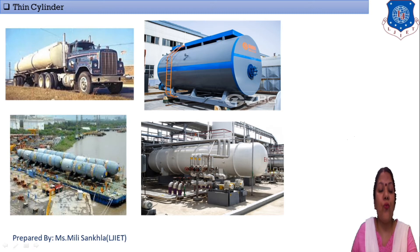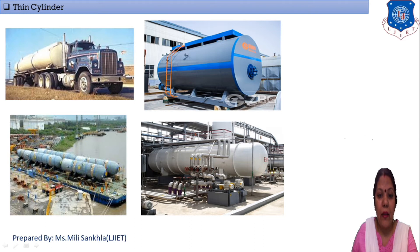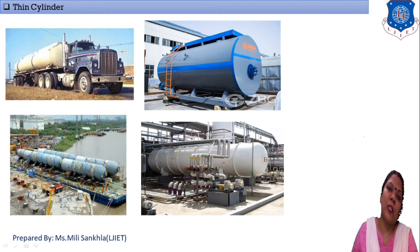Here I show four figures. In the first figure, the thin cylinder is used for transportation. In the second figure, the thin cylinder is used for storage purposes. The remaining figures also show thin cylinders used for storage. Ultimately, thin cylinders and spherical vessels are used for storage and for transportation from one place to another.